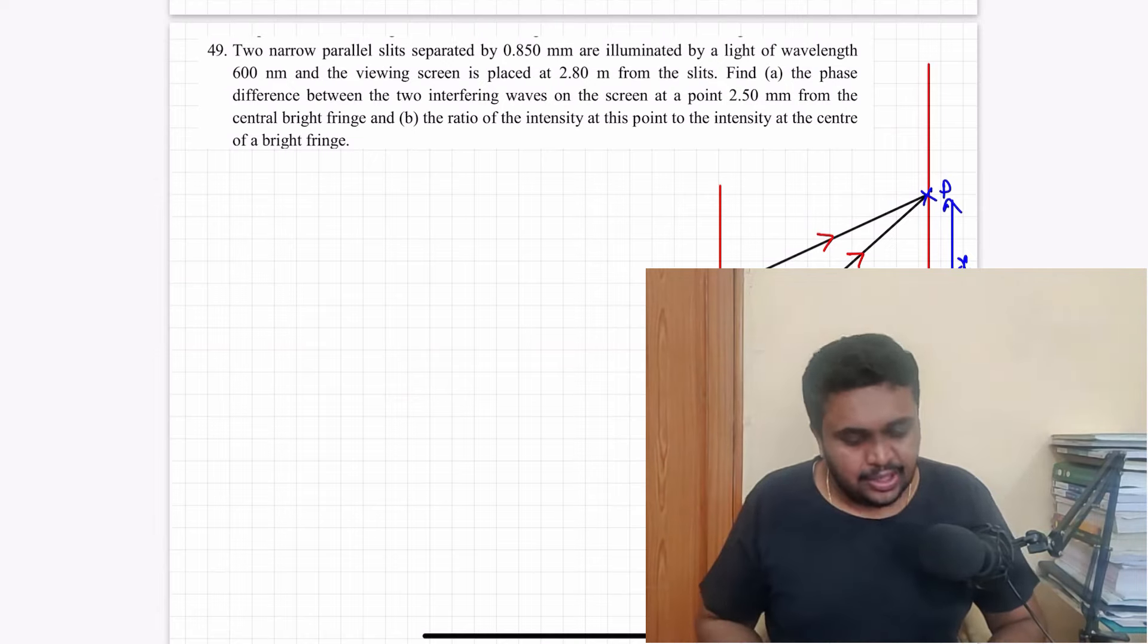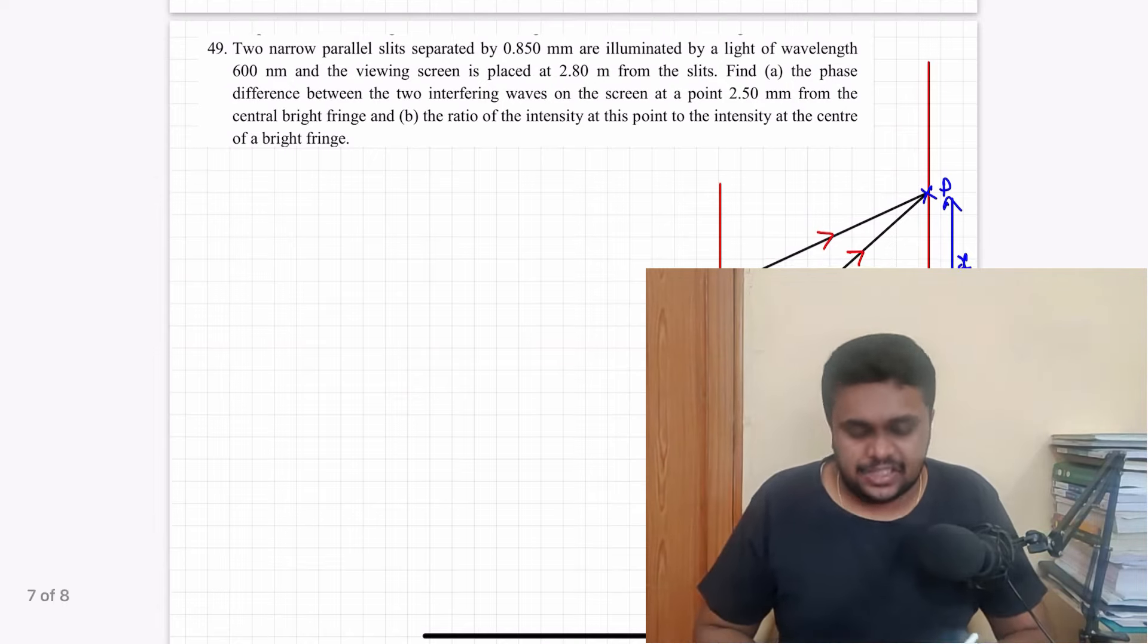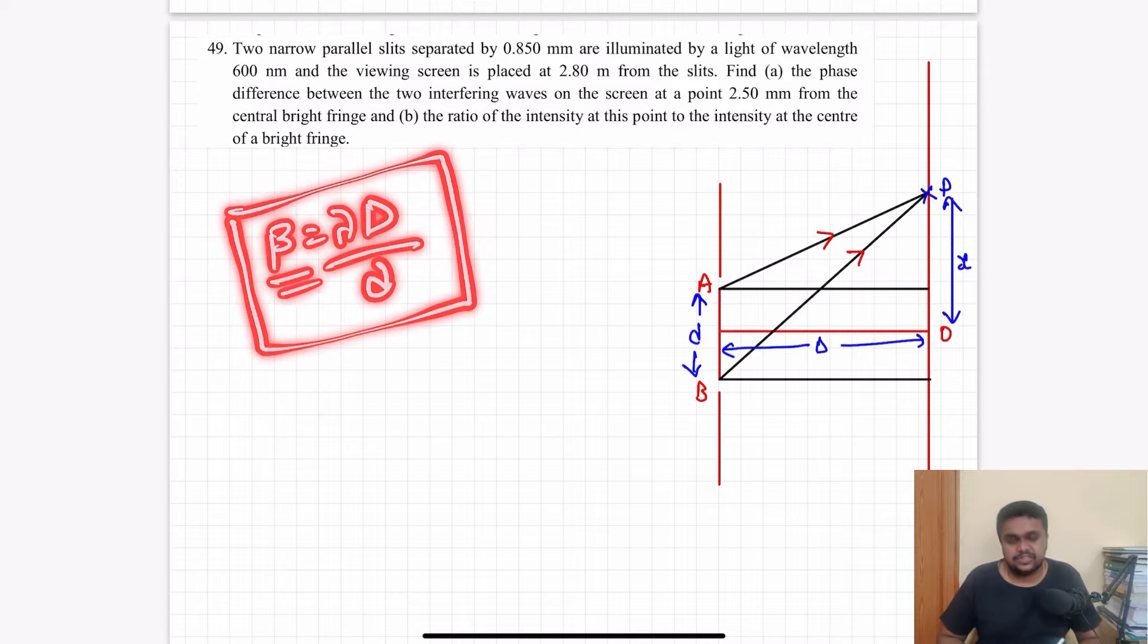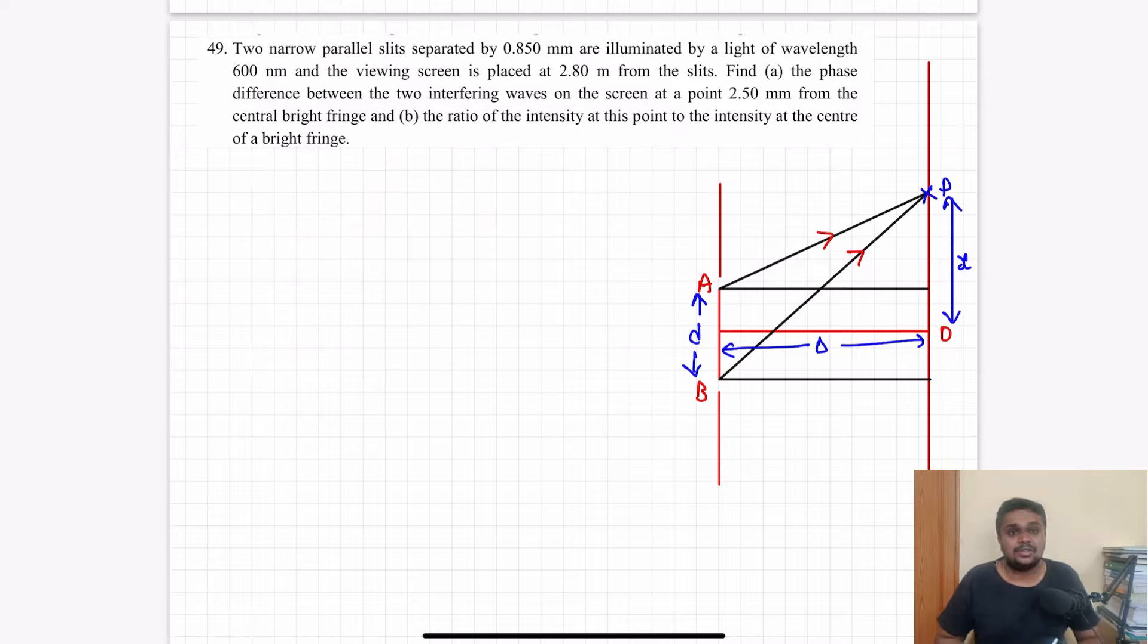First thing, what derivation will we solve? Beta is equal to lambda d by D. So Young's double slit experiment fringe width, we will solve the derivation, we will solve the basics.